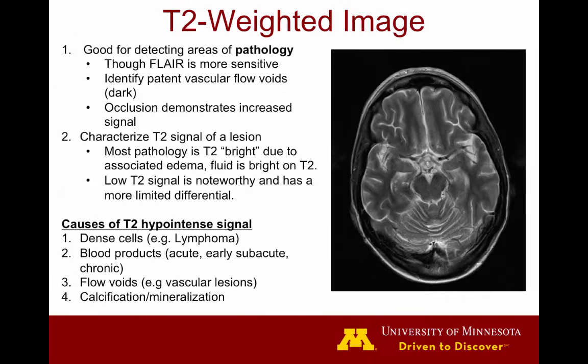The reason we have a flow void is that MRI needs several different pulses in order to generate signal. On a T2-weighted image, there is an initial pulse, a waiting period, another pulse at 180 degrees, and then the echo comes back. The blood that was in the vessel at the time of the initial pulse is long gone by the time the echo comes back, and the new blood never received that initial pulse. This is what we call a flow void — fast-flowing blood generates a flow void on T2-weighted images.